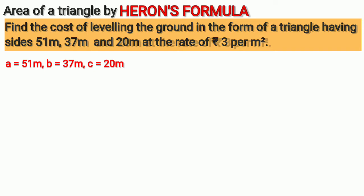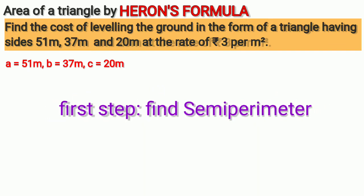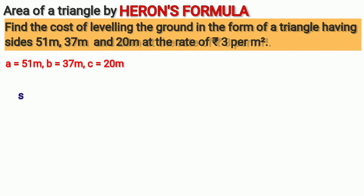Since we have three sides of the triangle, we will use Heron's formula to find area of triangle. First step is to find semi-perimeter. The formula for semi-perimeter is s = (a + b + c) / 2.